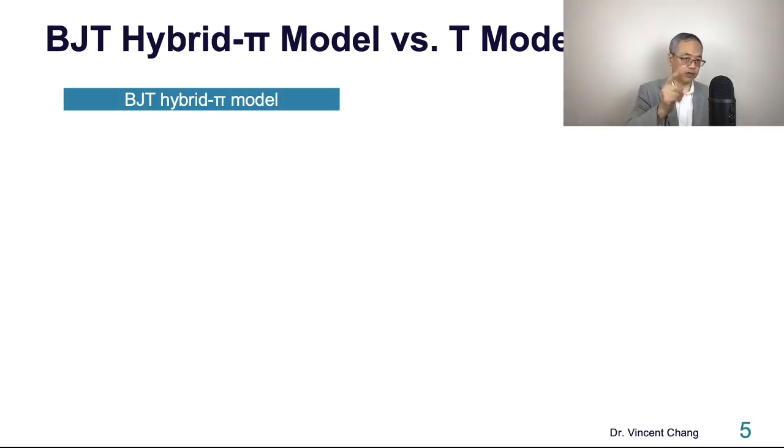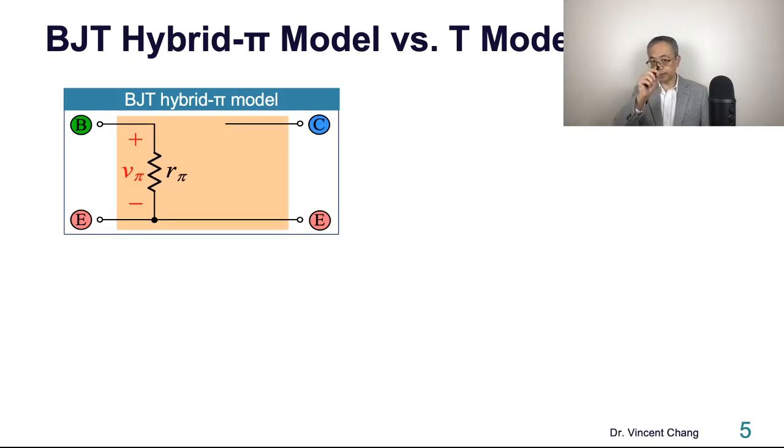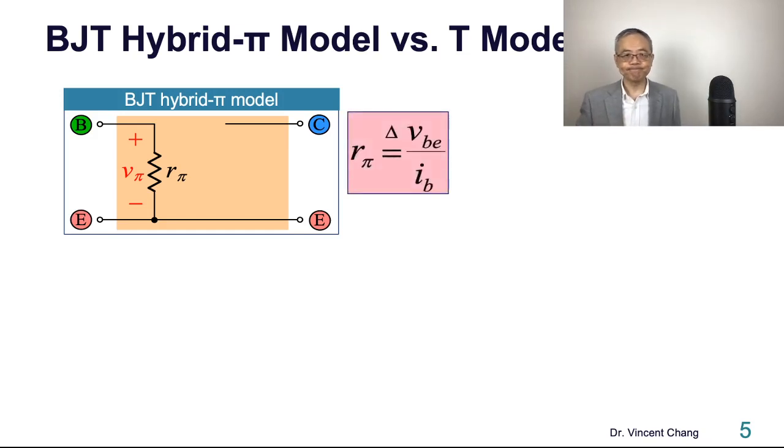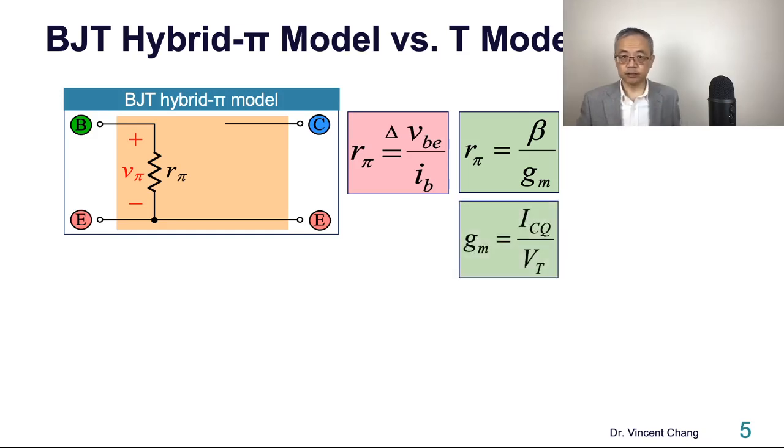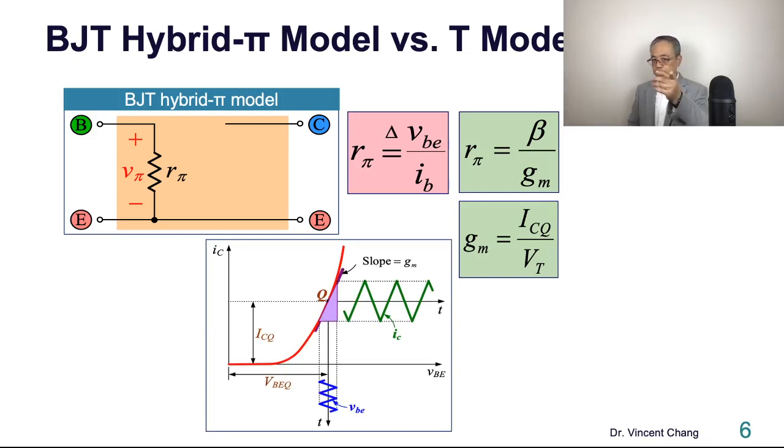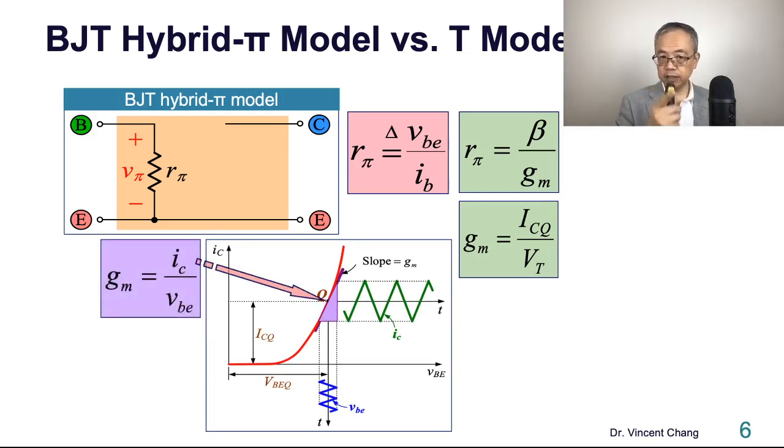So now this should be very easy for you. BJT's hybrid pi model versus the T model. Same thing here. This is Rpi. The resistance between base and emitter looking into the base is Rpi. And this is the definition and formulation. And next is the transconductance.